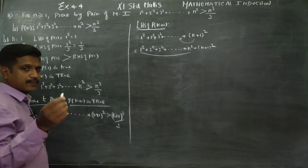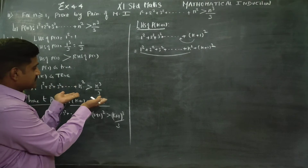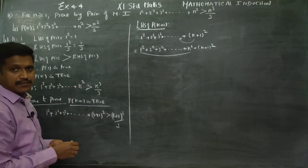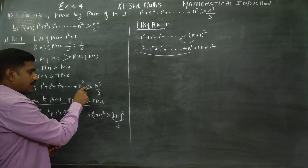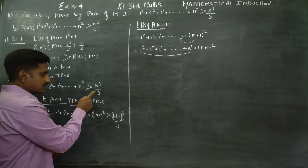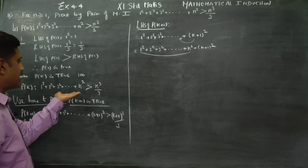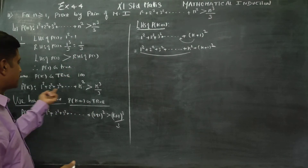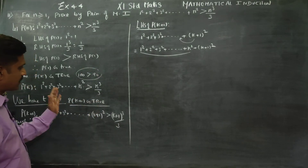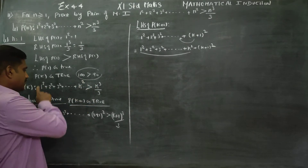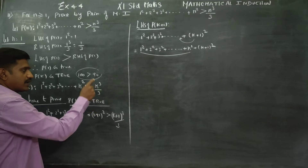For example, think of a balance scale. If this side is bigger and this side is smaller — say, this side is 100 grams and the other is 90 grams — then 100 is greater than 90. So here, 1 squared plus 2 squared plus 3 squared dot dot dot plus k squared represents 100 grams, and k cubed by 3 represents 90 grams.